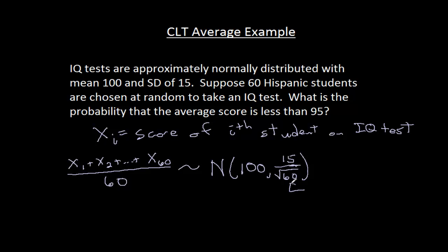And just to give you a little bit of perspective, that standard deviation is about 1.94. So notice while the standard deviation of an individual score is 15, when I average 60 scores together, that really drives down the standard deviation to be a little bit less than 2.